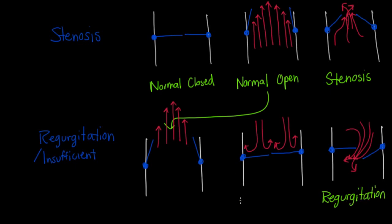And then we'll go ahead and label the normals again. And so this is normal closed. And this is normal open. And so what you really need to remember from this, because it'll help so much when you're trying to remember the different valvular diseases down the road, is that stenosis is a problem with opening.